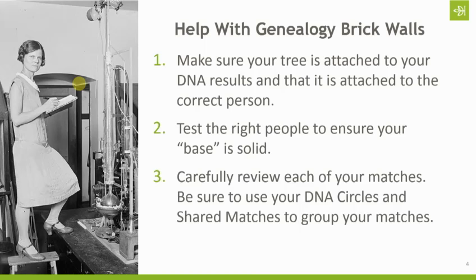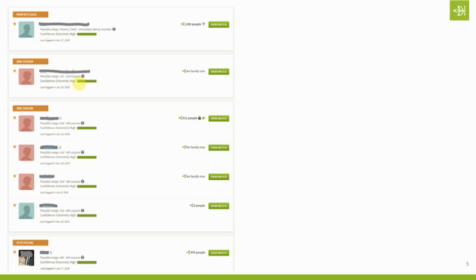Ancestry has provided a couple of tools to help: DNA circles and shared matches, so you can group your matches together more cleanly and start to see patterns and connections. If your family has quite a bit of intermarriage, some of those circles and shared matches are going to overlap — you'll have people related to you two or three different ways. Keep that in mind if you've got intermarriage or endogamy in your tree, particularly if it's recent.